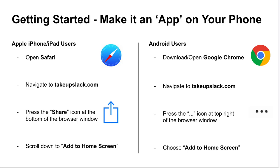For Android users using the Google Chrome browser, you'll navigate again to TakeUpSlack.com. Here you'll find the ellipses, typically in the top right of the browser window — the three dots. You'll scroll to find add to home screen to save the TakeUpSlack website to your phone screen and it'll behave like an app.